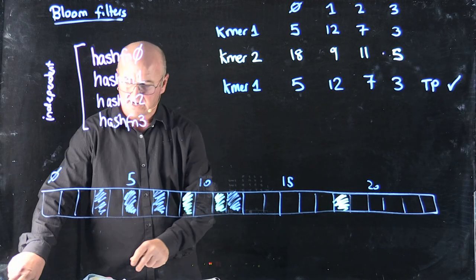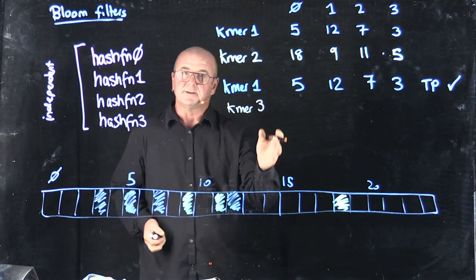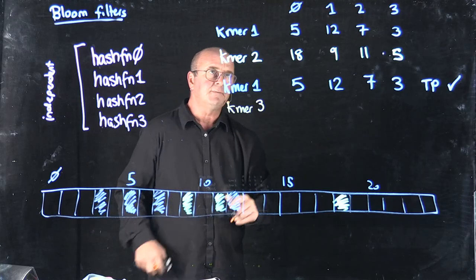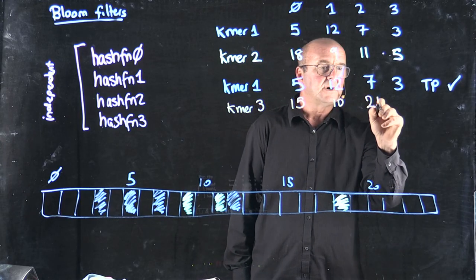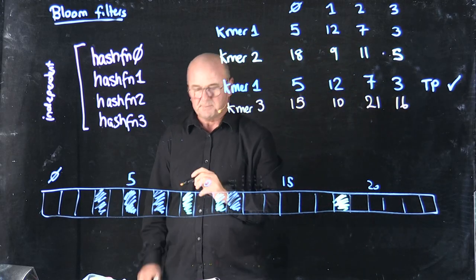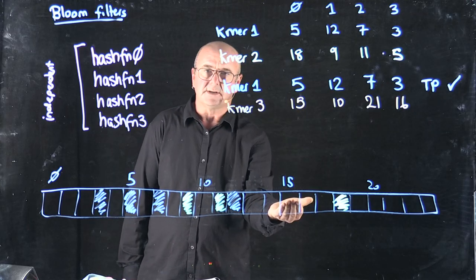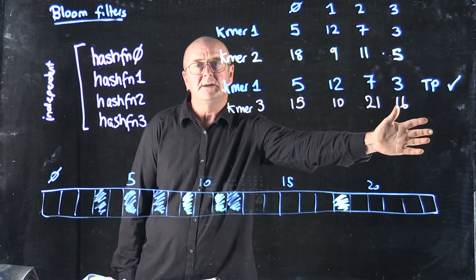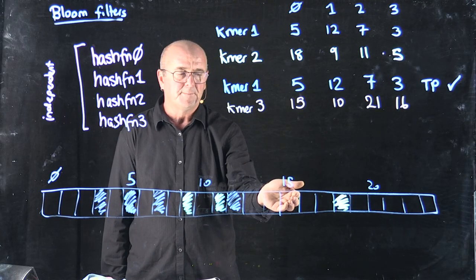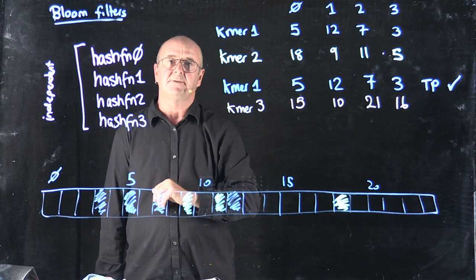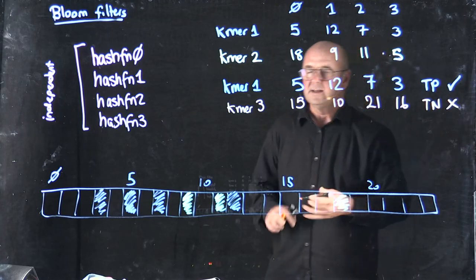Now suppose I come in with a totally different KMA — KMA number 3. I pass that KMA through my hash functions and I get 15 for the first hash function, 10, 21, and 16 for my other hash functions. Now if I want to know have I seen this KMA before, and I have not seen this KMA before, I say, is 15 true? No, it's not. Since that bit's not true, I don't even have to query the rest of the bits. Since the very first bit's not set, I can return false — I haven't seen KMA 3. So in this case I've got a true negative.